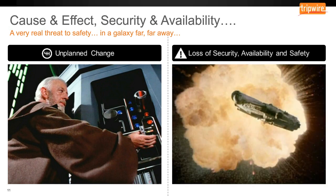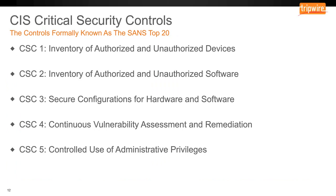To stop these attacks, the Critical Security Controls are available from the Center for Internet Security — formerly known as the SANS Top 20. There are 20 critical security controls, five of which are considered the most important. These top five can prevent attacks like the ones we just discussed, carried out by well-funded, knowledgeable criminals with a lot of resources trying to break into your environment.